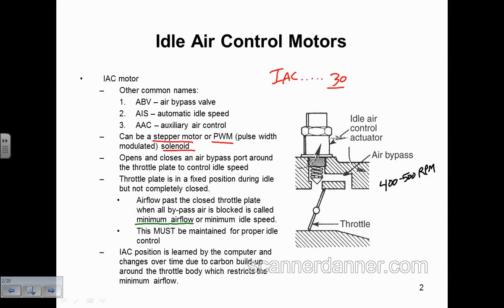So this is in memory — a factory default. That would be a normal IAC position to achieve, say, an RPM of 700 on this GM in park. Over time, as carbon deposits develop, the computer has to open the valve more to achieve the same RPM. So now with a dirty throttle plate, we might be at 49 steps out or 49 counts open to achieve the same idle speed.